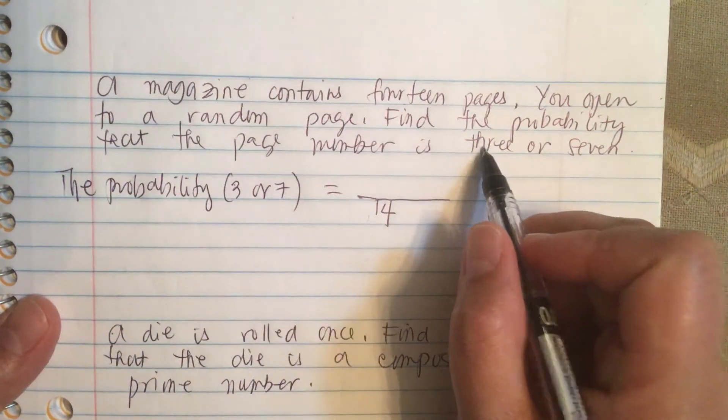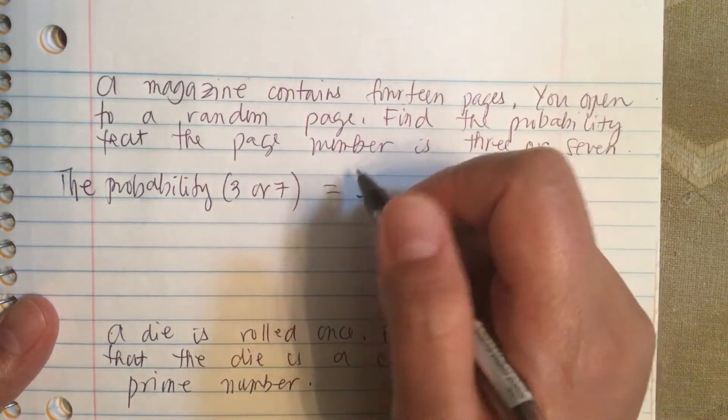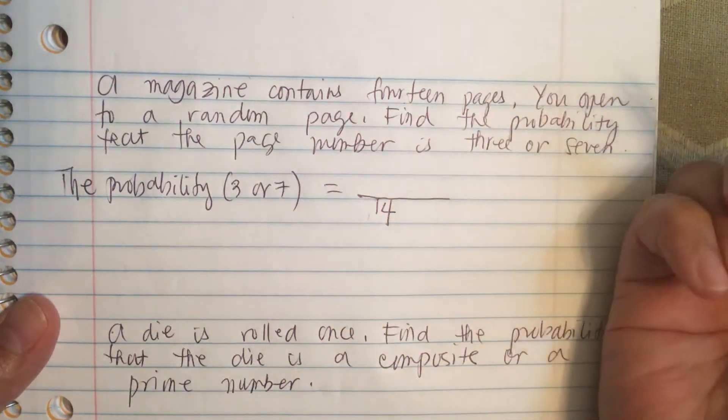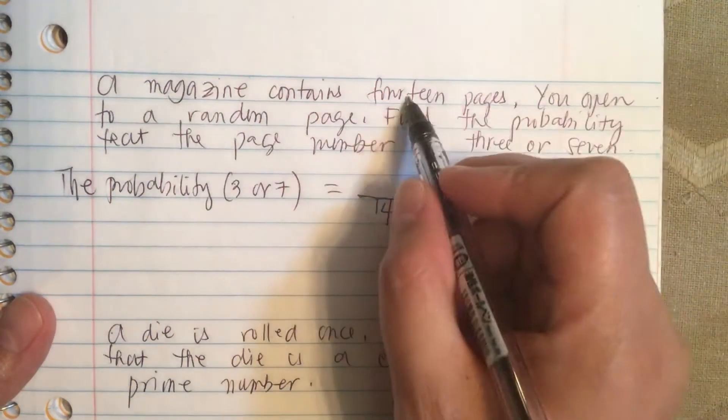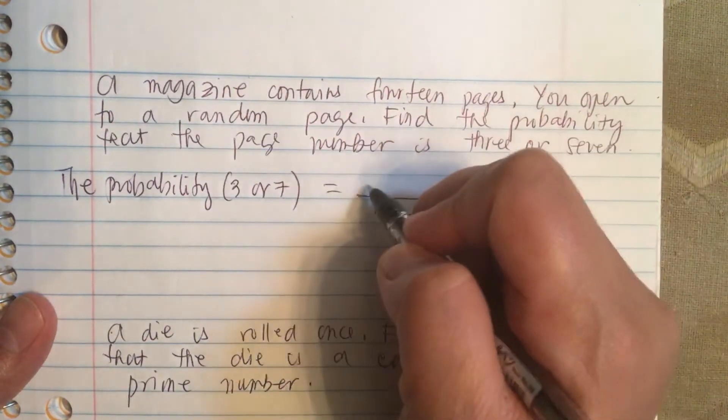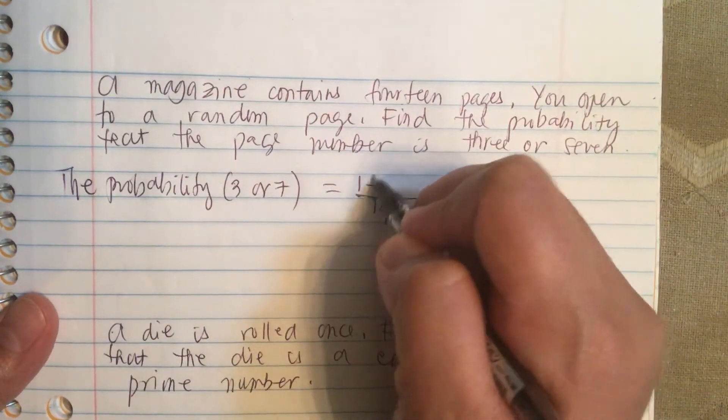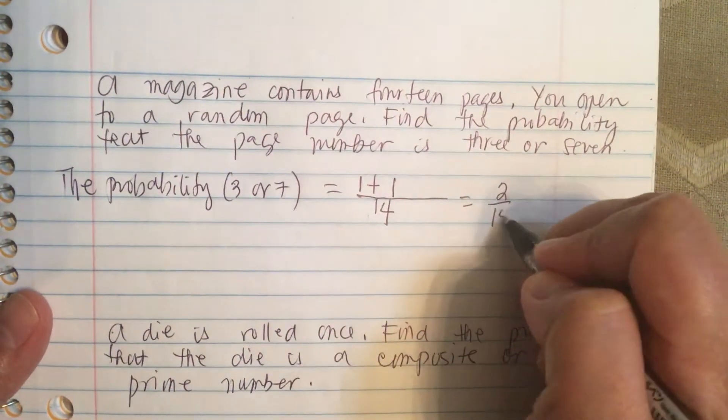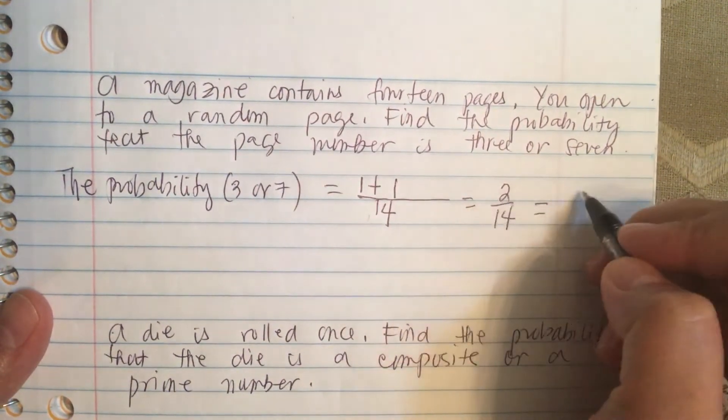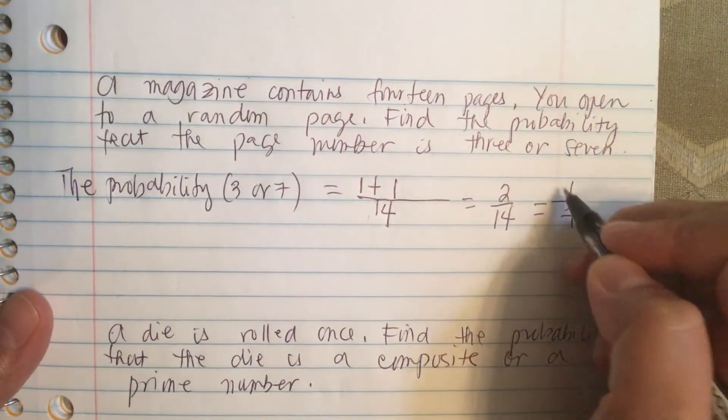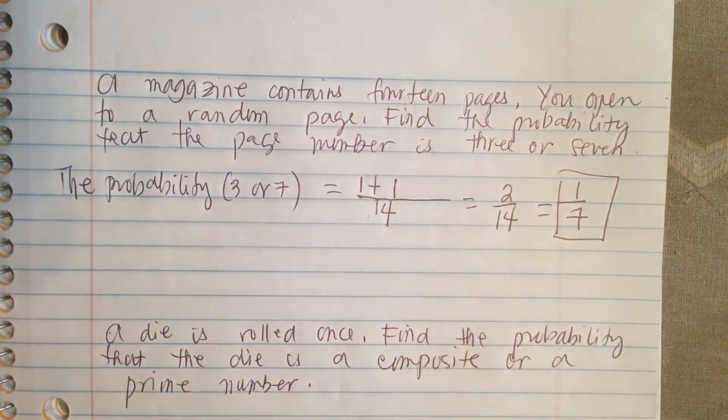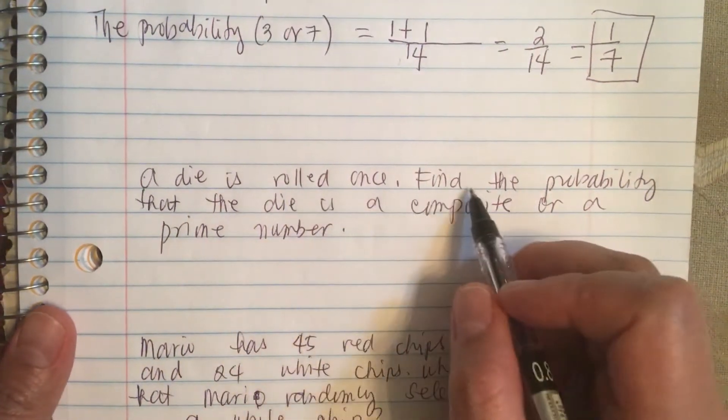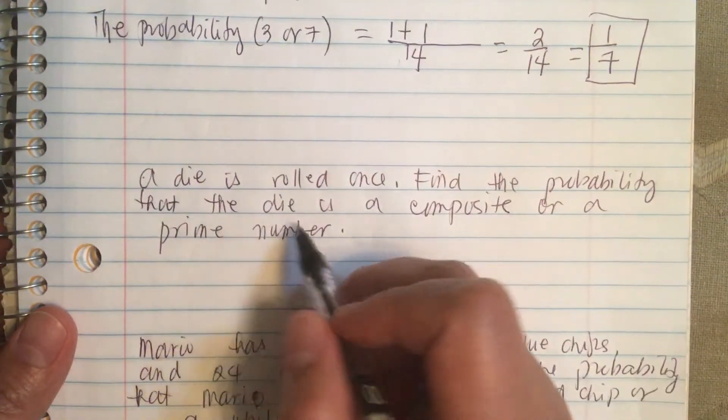Now there is one three and one seven because pages is numbered one, two, three, four, five, six, seven up to 14. So there is one number three and one number seven, so this is equal to two over 14 or this is equal to one seventh.